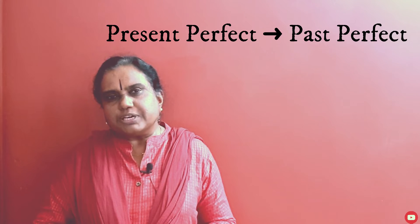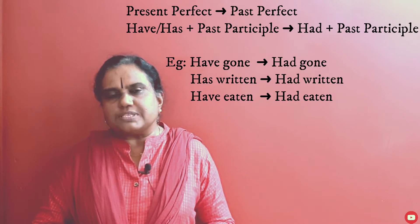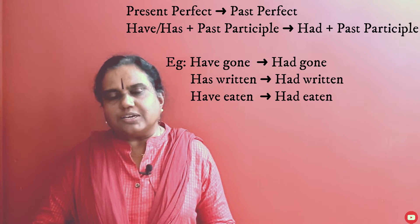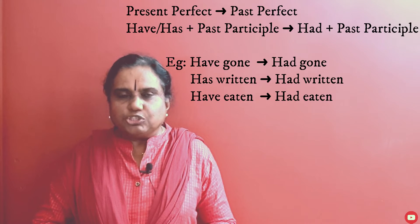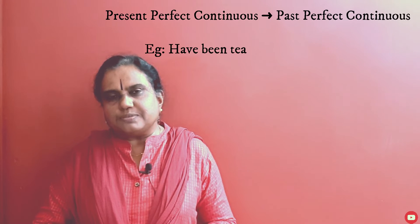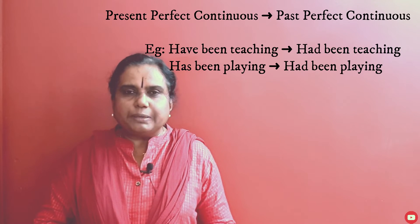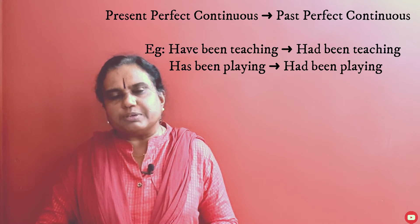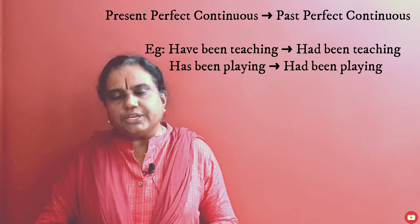Present perfect tense becomes past perfect tense. Present perfect uses 'have or has plus past participle': have gone, has returned. These become 'had gone' or 'had written.' Present perfect continuous tense — 'have been teaching' or 'has been playing' — becomes 'had been teaching' or 'had been playing.'